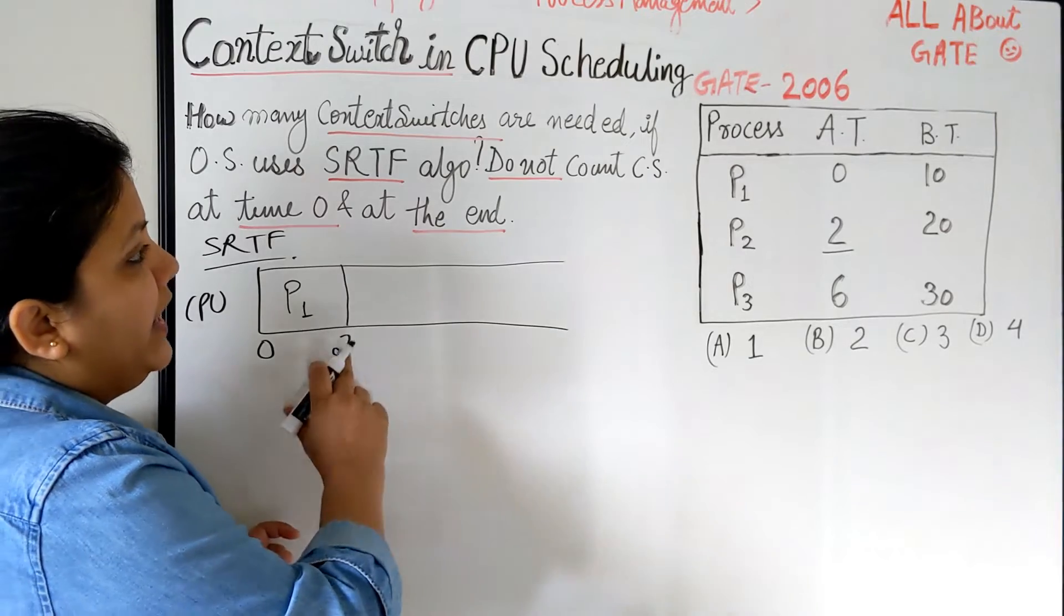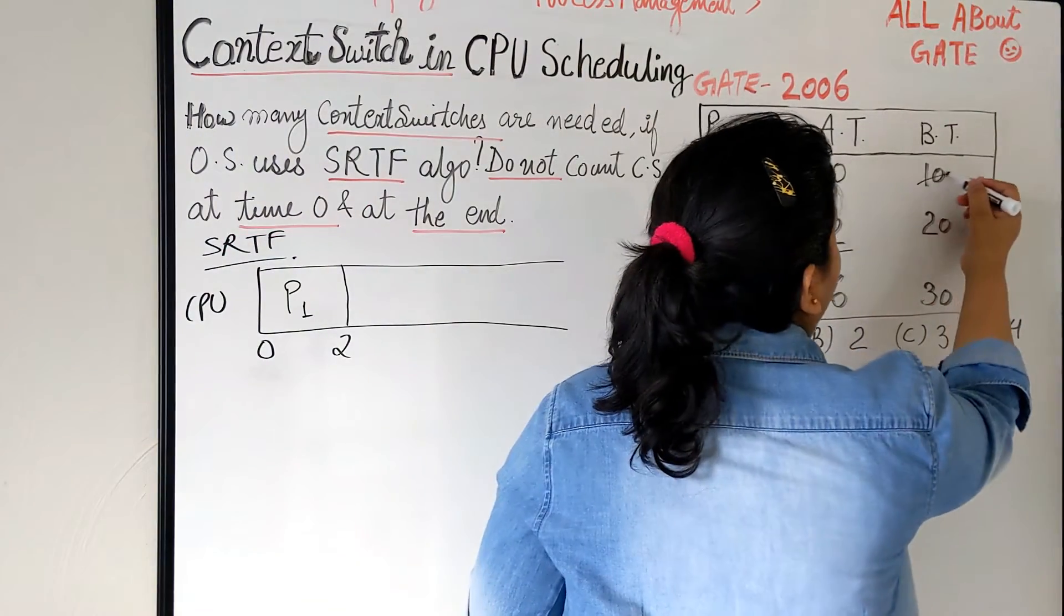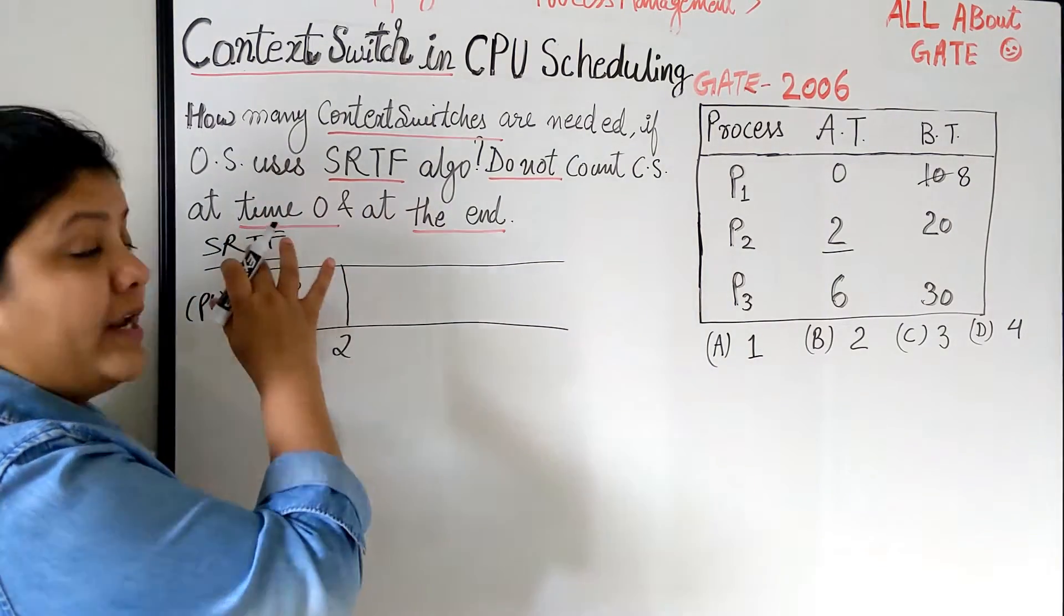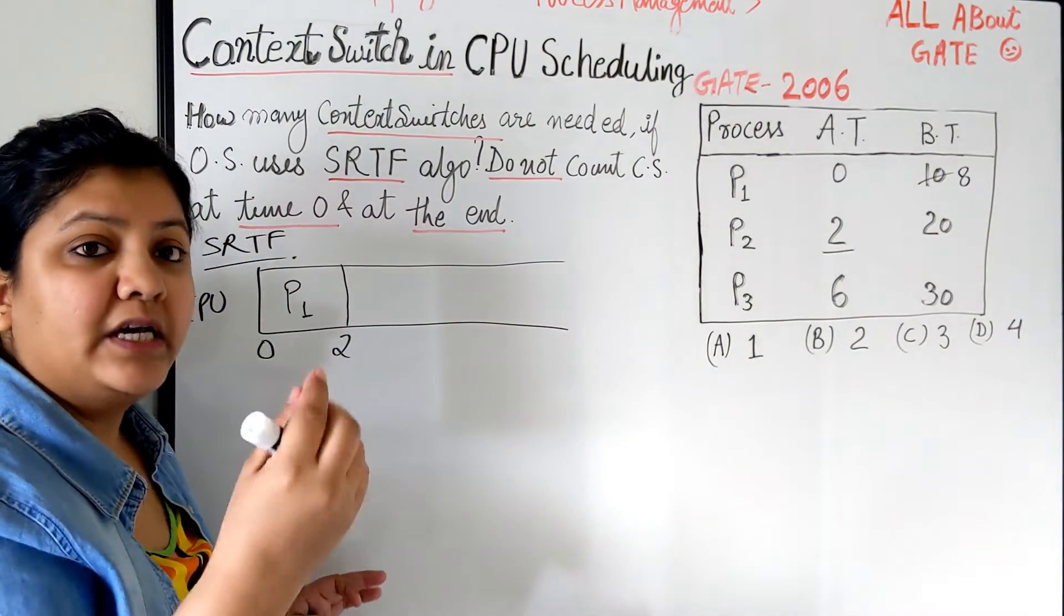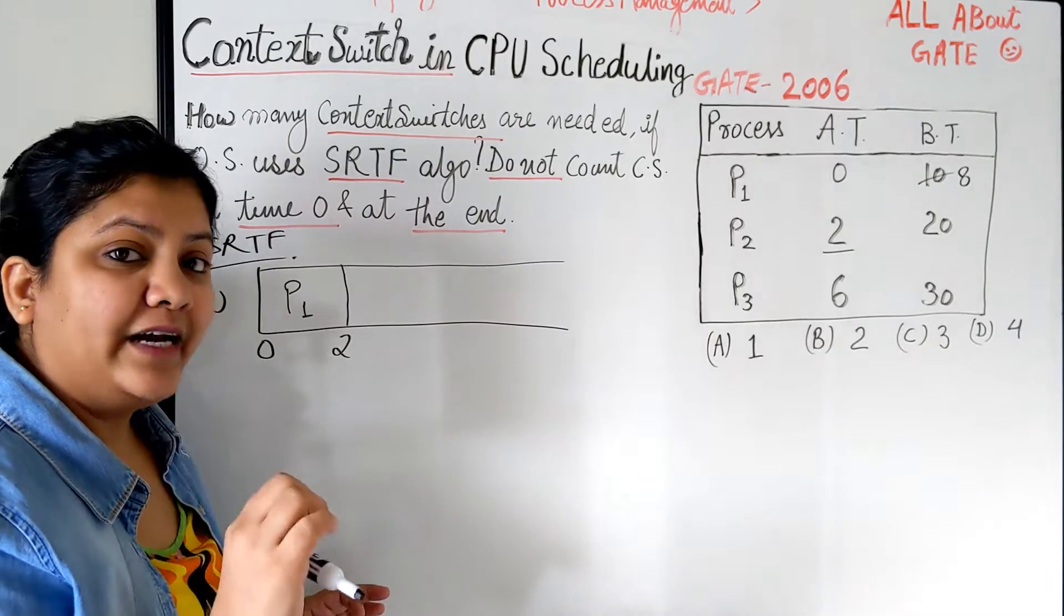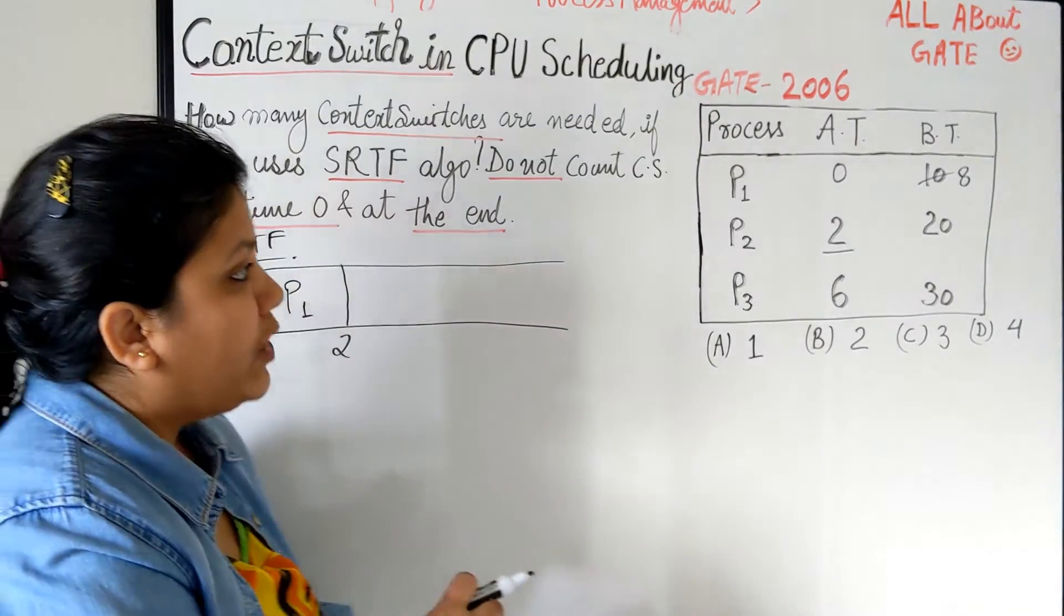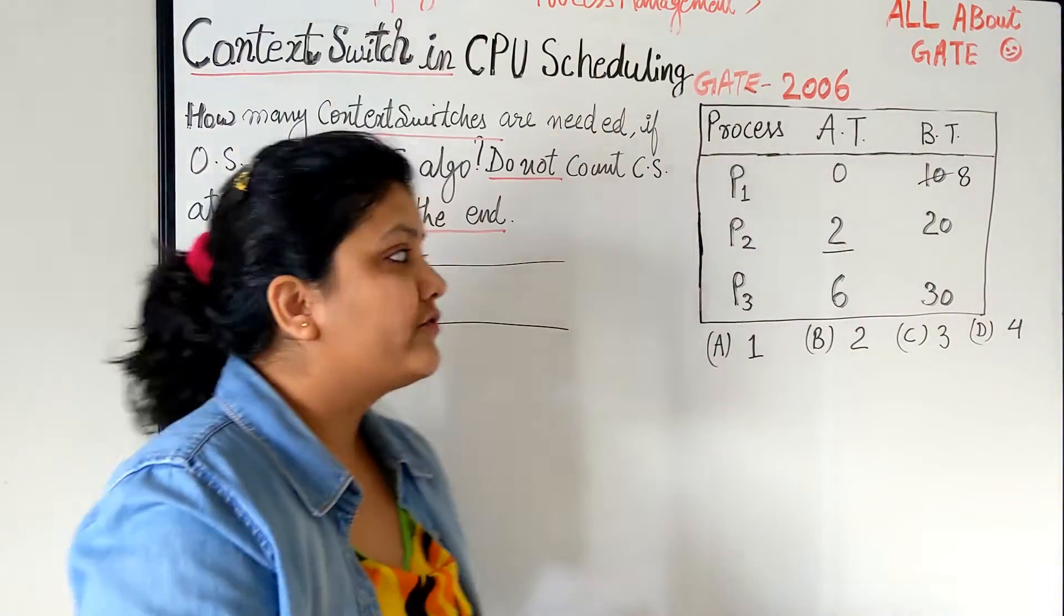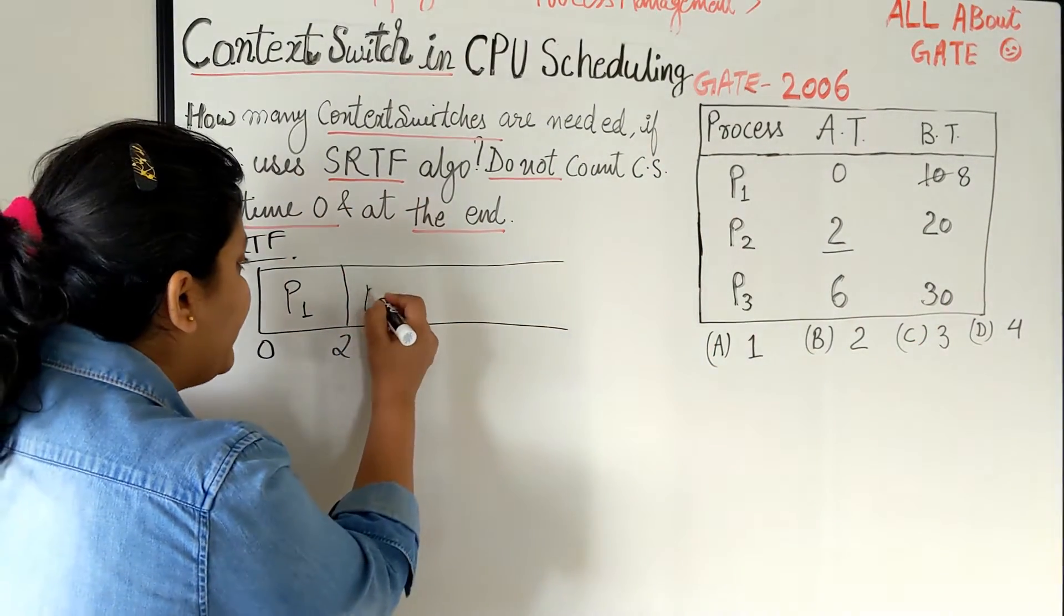Now at time 2, I am going to see because this has become 8 now, and this is 20, this is 30. So because the scheduling algorithm says shortest remaining time first, whichever process has the shorter time, schedule that first. So out of the 3 you can easily see 8, 20 and 30. Which is shorter? Of course 8. So P1 is going to continue.